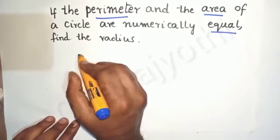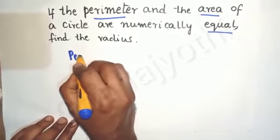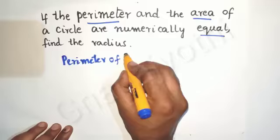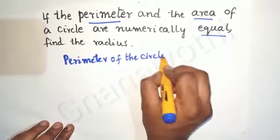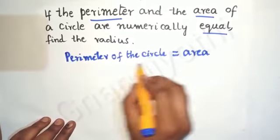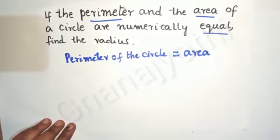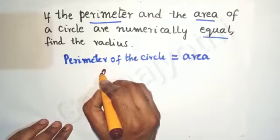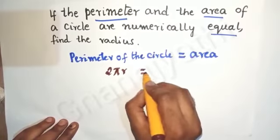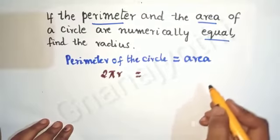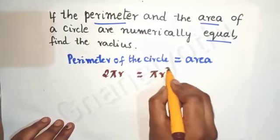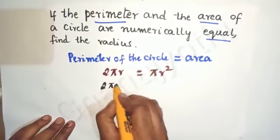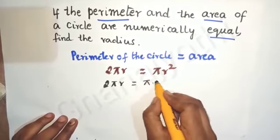Let us write: perimeter of the circle is equal to the area of the circle. We know the formula of perimeter, that is 2πr. We also know the formula of area, that is πr². So we can write 2πr = π × r × r.